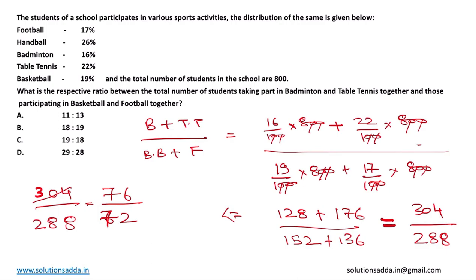Again while cancelling with 4, it comes down to 19 upon 18. Hence the final ratio between number of students taking part in badminton and table tennis to that of basketball and football together is 19 to 18. The correct answer is option C, 19 is to 18.